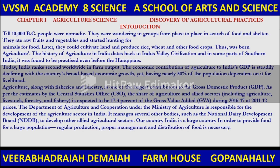The Department of Agriculture and Cooperation under the Ministry of Agriculture is responsible for the development of the agriculture sector in India. It manages several other bodies, such as the National Dairy Development Board (NDDB). India is a large and vastly populated country, next to China. In order to provide food for a large population, regular production as well as proper management and distribution of food is very essential.